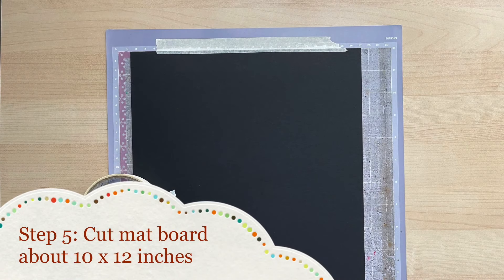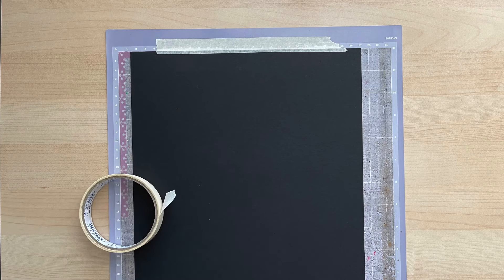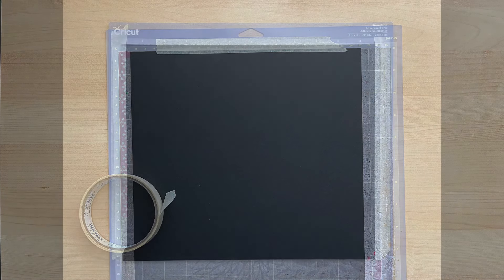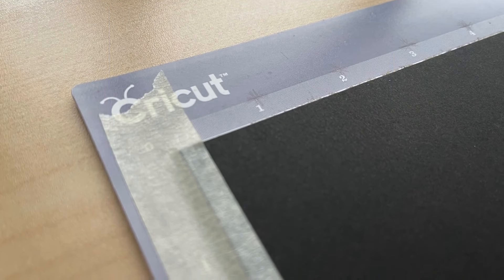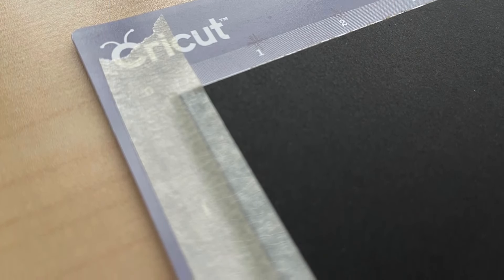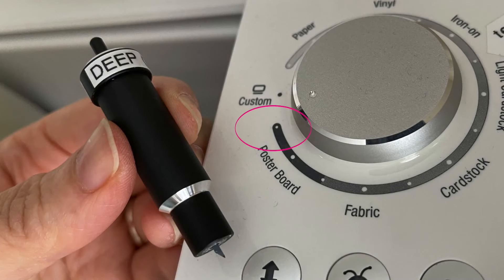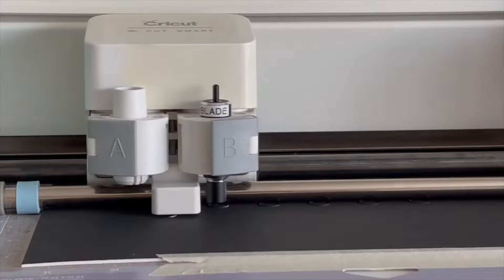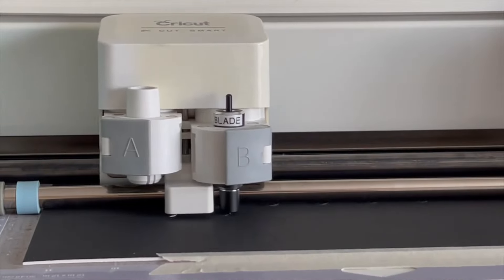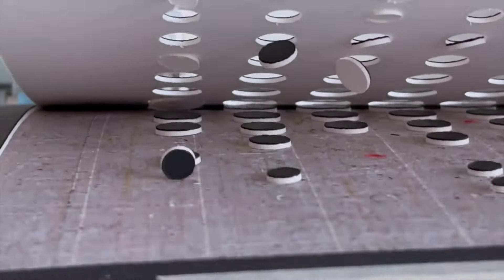Step five cut your matboard about 10 by 12 inches. Since my strong grip mat is extremely used I also added masking tape along the edges to make sure my matboard didn't budge a single bit. Step six I used a deep blade on the last setting before custom so my Cricut would cut each shape twice before moving on to the next circle.